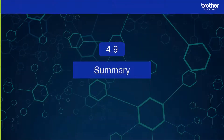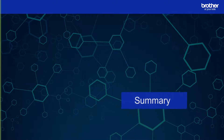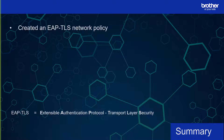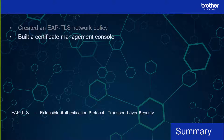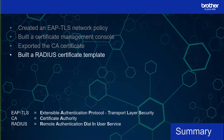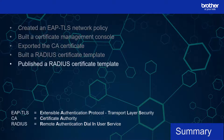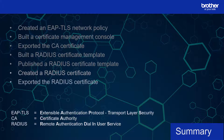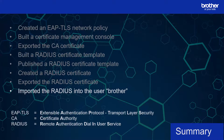And we are done. To summarise: I started by creating an EAP-TLS network policy in Windows Network Policy Server. I then built a certificate management console for easy access to the relevant certificate stores. Using this console I exported my server's CA certificate. I then created a RADIUS-specific certificate template, which I published and used to create one for my Brother device. In order for my Brother device to use it I needed to export a copy including its private key. I then imported the certificate into the Active Directory user Brother to provide it with an alternative method of authentication. I am now ready to set up my Brother device, which I will do in the next video. A link to it is on the screen.